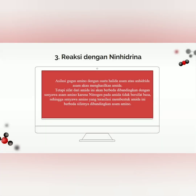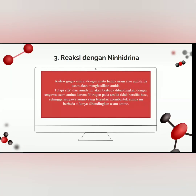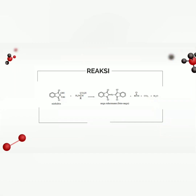Kemudian yang ketiga ada reaksi dengan ninhidrin. Reaksinya dapat digambarkan sebagai berikut: ninhidrin direaksikan dengan asam amino akan menghasilkan hidrindantin yang ditandai dengan warna biru ungu, dan menghasilkan aldehida, gas karbon dioksida, dan juga air.